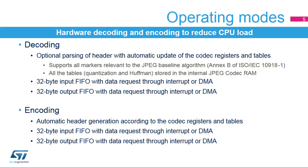The JPEG Codec has 2 operating modes for decoding and encoding. During decoding operations, the JPEG header can be automatically parsed. The Codec supports all the markers relevant to the JPEG baseline algorithm. All the tables stored in the header are automatically copied into the local Codec RAM. The data file is sent to the Codec through a 32-byte input FIFO, and the decoded data are available through a 32-byte output FIFO.